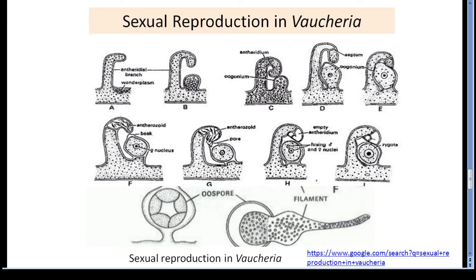The nuclei of the antheridium divide mitotically again and again, and around each nucleus cytoplasm is deposited. Such small bits metamorphose into a biflagellated antherozoid. These antherozoids are liberated through an apical pore. Each antherozoid is haploid, uninucleate, pear-shaped or spindle-shaped. They have unequal flagella — one flagellum is tinsel type and the other is whiplash type.